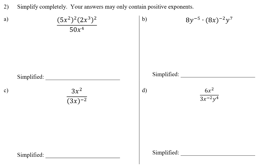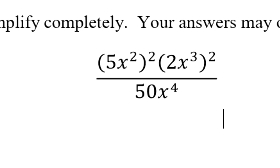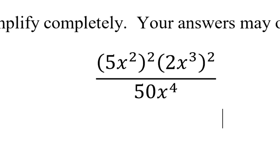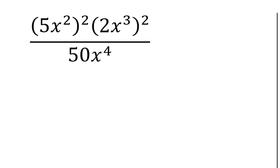Question two had four parts. The instructions say simplify completely, meaning we're not going to leave any giant ones lingering across the numerator and denominator — eliminate all common factors — and your answer may only contain positive exponents. These are problems that many of us are starting to get. We're getting closer, but we're still not at what I would call classroom mastery, so keep going.